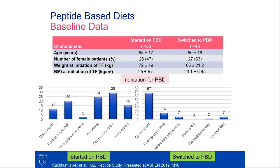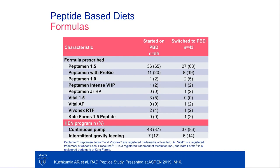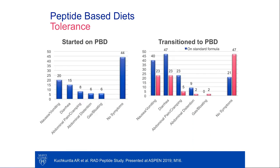We reviewed the notes to understand what the prescriber was thinking. That component of fat malabsorption was what prompted starting patients right away on peptide-based formula. For those who were switched, the reason most of the time was intolerance. Most were on continuous feeding, with some cases successfully using intermittent feeding. Looking at tolerance, most patients actually did quite well on the peptide-based formula. For those started on peptide-based diets, symptoms do continue to arise—that's a normal part of enteral nutrition practice—but many patients had no symptoms whatsoever.